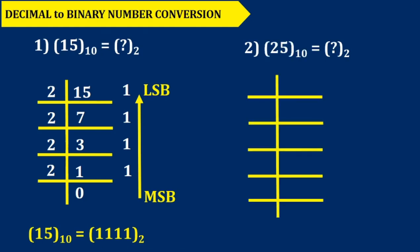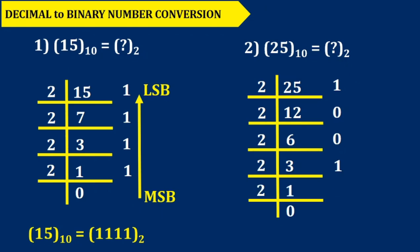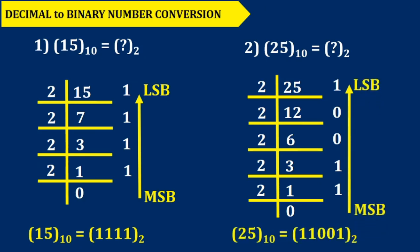Let's have a look at another problem. We have to convert 25 into its corresponding binary number. 2 times 12 is 24, so the remainder is 1. 2 times 6 is 12, remainder is 0. 2 times 3 is 6, remainder is 0. 2 times 1 is 2, remainder is 1. We collect these remainders from downward to upward. Finally we get 11001. This is the binary corresponding number of decimal number 25.